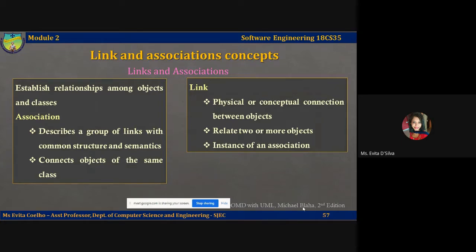A link is a physical or conceptual connection among objects. For example, I can have a link named 'John Smith works for Simplex Company.' John Smith and Simplex Company are two objects — John Smith may be a person, Simplex Company may be a company. So 'works for' is nothing but a link connecting John Smith to Simplex Company.